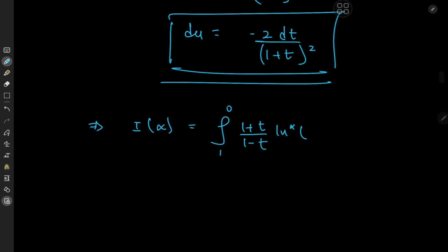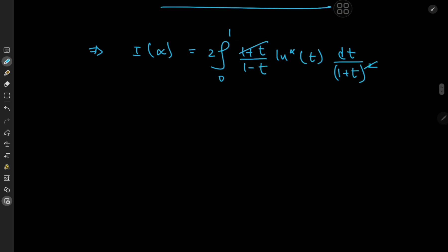We can get rid of the negative sign by switching up the limits of integration. We have dt divided by (1 plus t) squared. Some cancellation is in order, and in the denominator we have (1 minus t) times (1 plus t), which gives us (1 minus t squared). So we have the integral from 0 to 1 of log to the alpha of t divided by (1 minus t squared) dt.